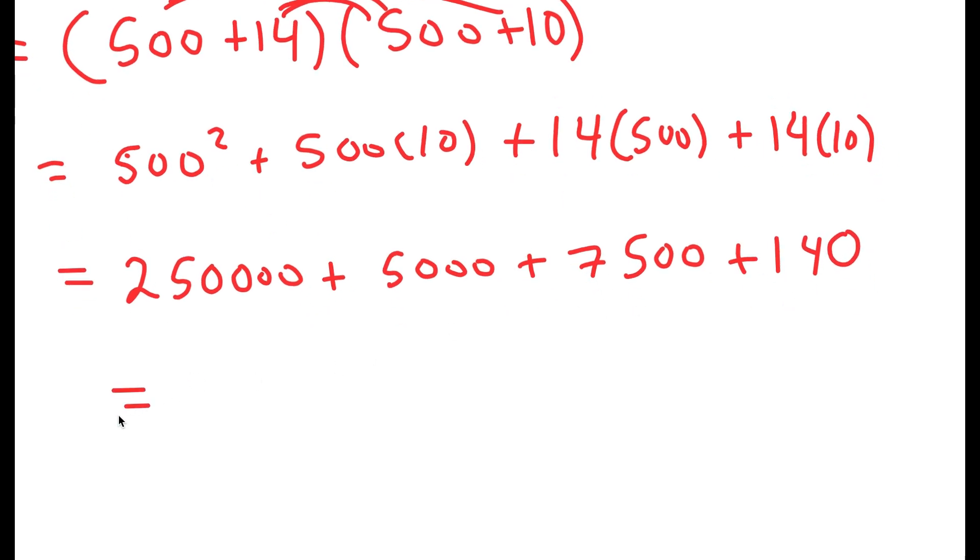So now all I have to do is simply add these up. So I get 250,000 plus 5,000 plus 7,500 is 12,500. And then I have plus 140 at the end.